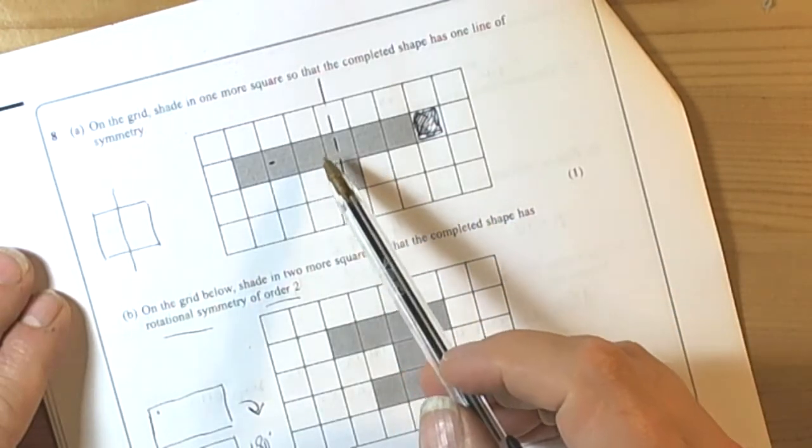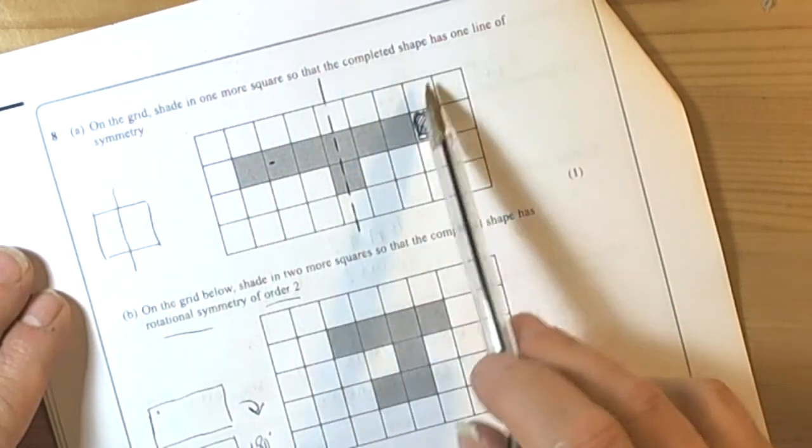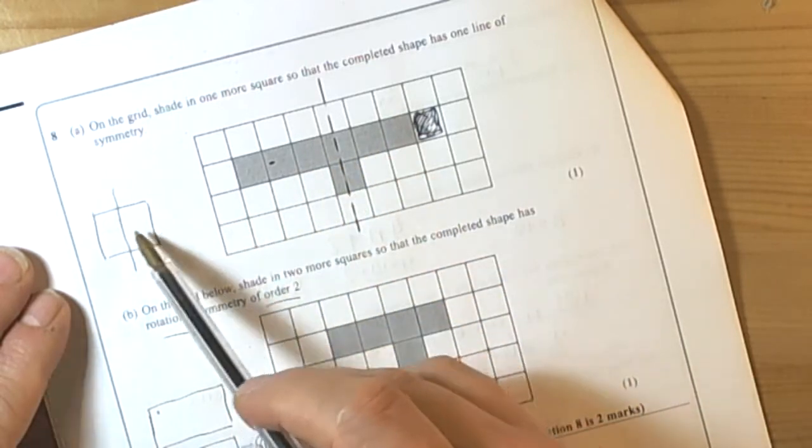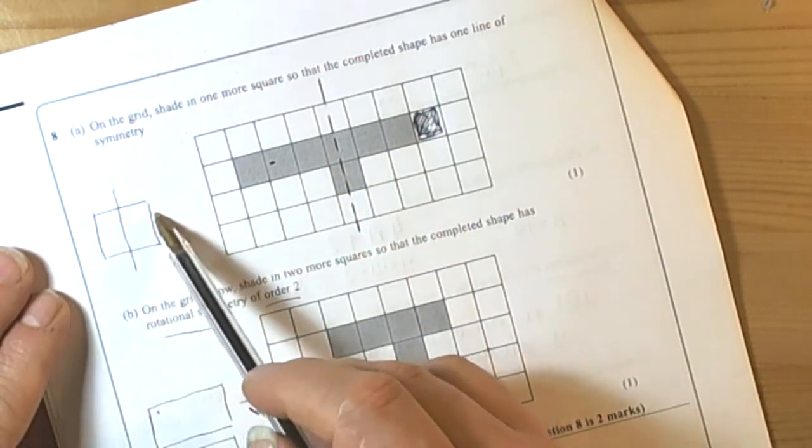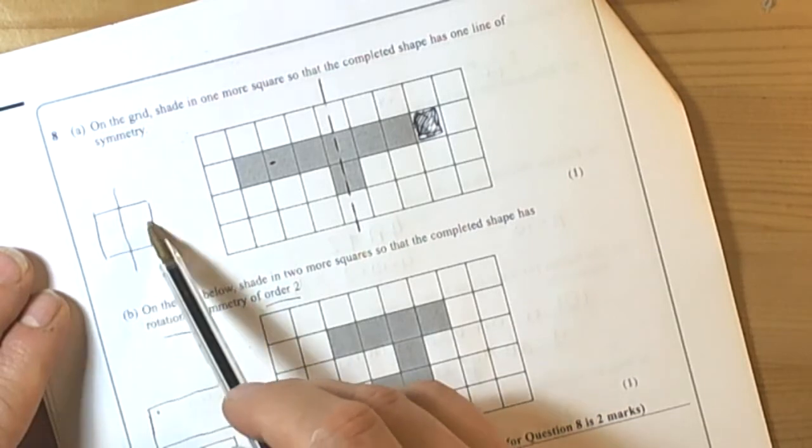Here we have question 8 on the June 2012 paper talking about symmetry. We need to remember that a line of symmetry is if we split a shape in half, then each half would fold on top of each other with no gaps.